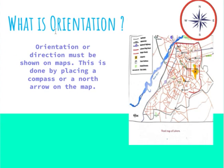What is Orientation? Orientation or direction must be shown on maps. This is done by placing a compass or a north arrow on the map. You see this compass? It's an orientation.